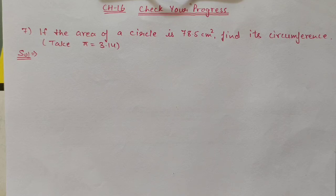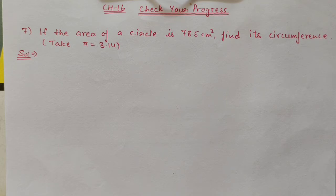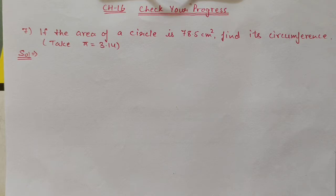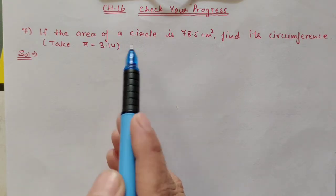Hello students, we are doing Chapter 16: Perimeter and Area — Check Your Progress. In the last video we completed till question number 6. Today we are starting from question number 7: If the area of a circle is 78.5 centimeter square, find its circumference. Take pi equal to 3.14.